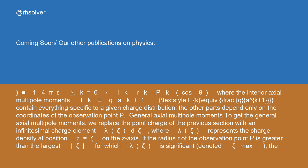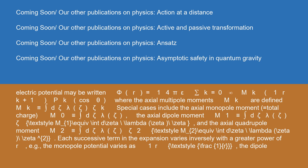The other parts depend only on the coordinates of the observation point P. To get the general axial multipole moments, we replace the point charge of the previous section with an infinitesimal charge element λ(ζ) dζ, where λ(ζ) represents the charge density at position z = ζ on the z-axis. If the radius R of the observation point P is greater than the largest ζ for which λ(ζ) is significant (denoted ζ_max), the electric potential may be written: φ(R) = (1/4πε) Σ(k=0 to ∞) m_k × (1/R^(k+1)) × P_k(cosθ), where the axial multipole moments m_k are defined as m_k ≡ ∫ dζ λ(ζ) ζ^k.